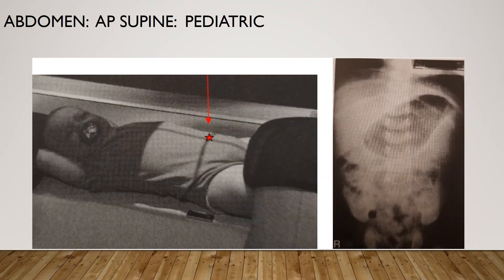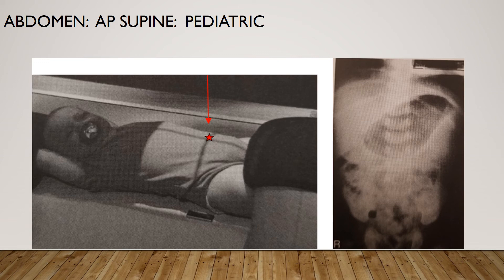For the pediatric AP supine abdomen, the child is supine with arms immobilized above the head and legs immobilized — best done using sandbags. Parental assistance can be used if necessary, but the parent must not be pregnant and must wear a lead apron. The central ray for infants and young children is one inch above the umbilicus; for older children, it is at the level of the umbilicus. We never use the umbilicus as a landmark for adults because it tends to move. On the x-ray, verify soft tissue and gastrointestinal structures are on the image, diaphragms and symphysis pubis are included if possible, and optimal density and contrast for soft tissue and skeletal structures with no motion.